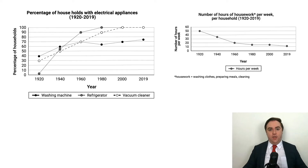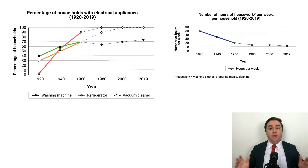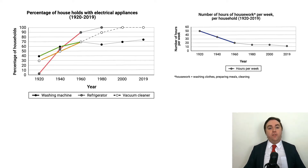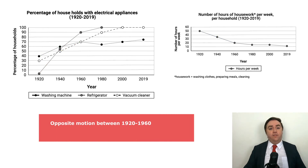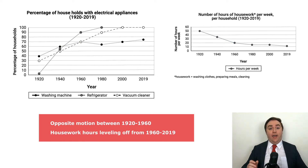The next thing we have to include is the relationship between these graphs. We can see a clear contrary relationship between the two graphs that occurs at 1960. A contrary relationship means that the lines are moving in opposite directions. 1960 is the last year in which the three electrical appliances were all increasing, and it's the year where the decrease in housework hours stopped falling so sharply. This relationship at 1960 is a key feature between the two graphs that must be included. We can also include that housework hours level off after 1980, and the same trend is generally true for the three electrical appliances.